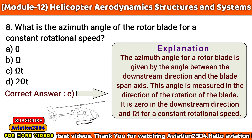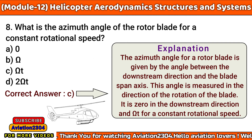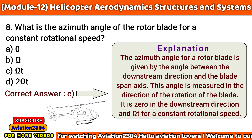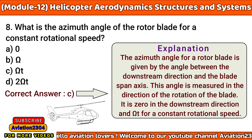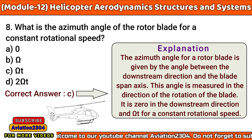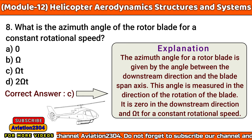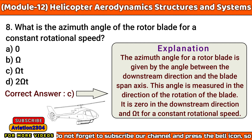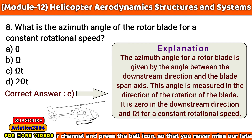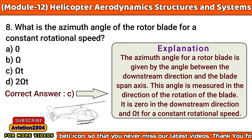What is the azimuth angle of the rotor blade for a constant rotational speed? A. Zero, B. Pi, C. Pi·T, D. 2·Pi·T. The correct answer is C. The azimuth angle for a rotor blade is given by the angle between the downstream direction and the blade span axis, measured in the direction of rotation of the blade. It is zero in the downstream direction and Pi·T for a constant rotational speed.